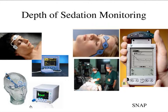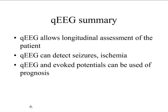To summarize: quantitative EEG allows longitudinal assessment of the patient in the ICU. You can detect seizures and ischemia with it, but you have to understand what the parameter is that you're looking at and put it into context with the patient. Each parameter can go up or down for reasons other than seizures, so you have to look at the raw EEG and verify. It doesn't make the diagnosis by itself, but it helps you make the diagnosis. Evoked potentials combined with quantitative EEG have really been shown to be useful.